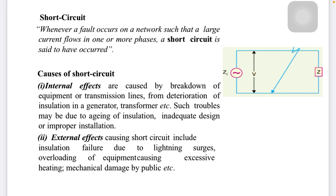For example, during the rainy season, a tree that is directly connected with live lines creates a conductive atmosphere, and that is the chance of contact — that is called an external fault. An internal fault occurs due to breakdown of equipment or transmission lines from deterioration of insulation.